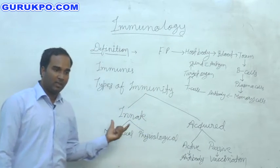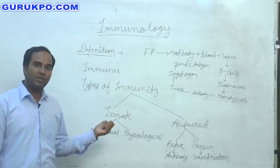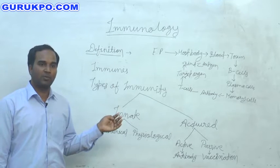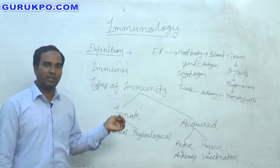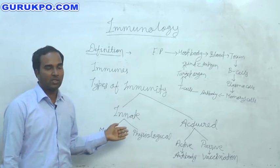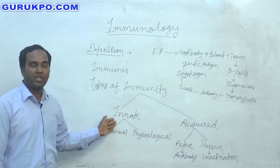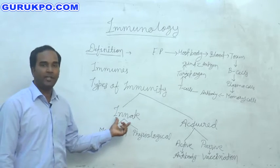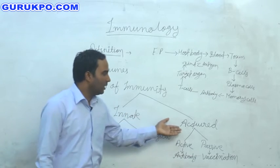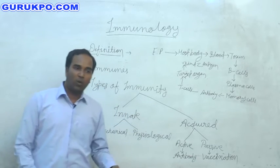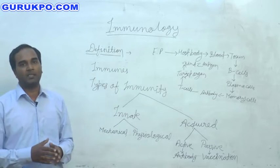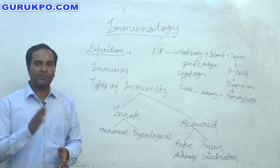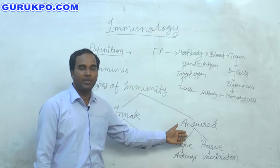When immunity is present from birth — from the inborn condition during embryogenesis — it is called innate immunity. It means an inborn immunity present in a baby is called innate immunity. When we acquire some immunity through vaccination, injection, or medicine by different ways, that is called acquired immunity.